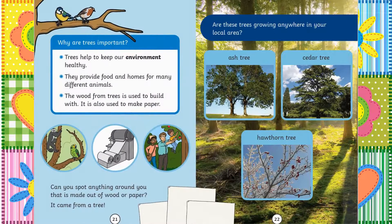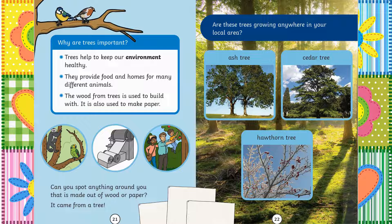Why are trees important? Trees help to keep our environment healthy. They provide food and homes for many different animals. The wood from trees is used to build with. It is also used to make paper. Can you spot anything around you that is made out of wood or paper? Well, it came from a tree. Are these trees growing anywhere in your local area? The ash tree, cedar tree and the hawthorn tree.